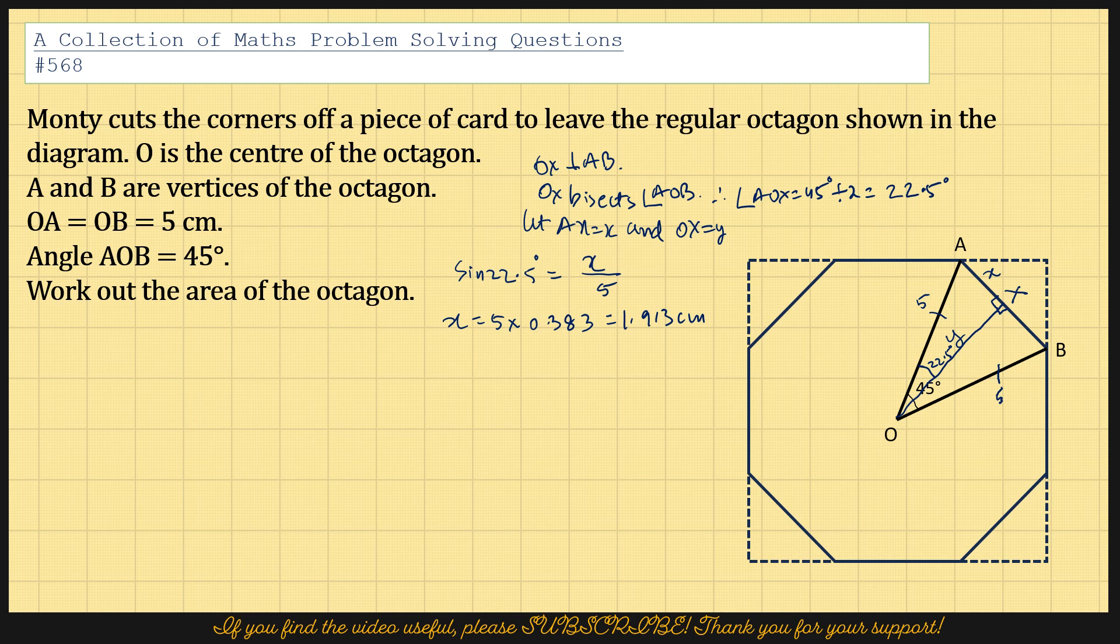And then similarly to find y, we'd have to do cos of 22.5 degrees equals y divided by 5. So y is 5 times cos of 22.5. And the cos of 22.5 is 0.923, 924. So 0.924.